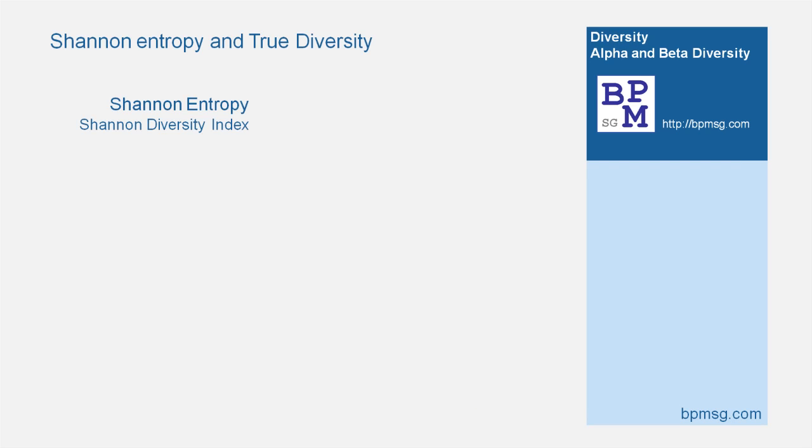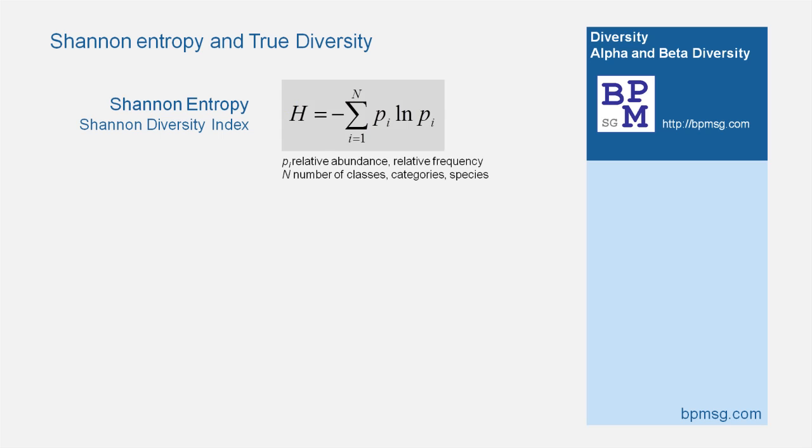On my website, you can find a free Excel template for non-commercial use and experiment with other data and applications. We will use the Shannon Entropy, also named Shannon Diversity Index, to describe diversity.